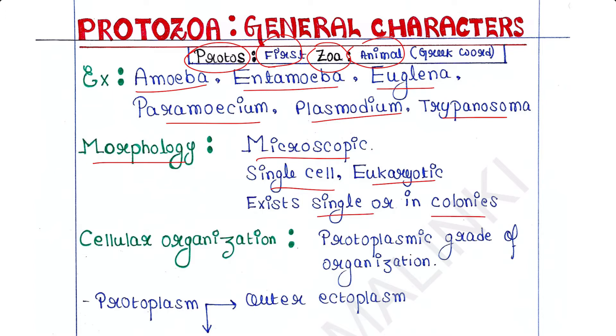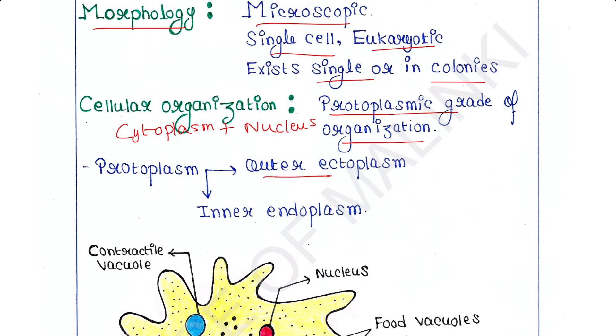Cellular organization: they have protoplasmic grade of organization. The protoplasm means it is cytoplasm plus nucleus. The protoplasm is divided into outer ectoplasm and inner endoplasm.